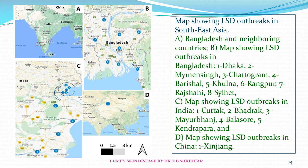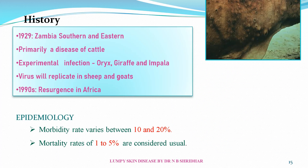A map shows LSD outbreaks in South East Asia, Bangladesh, and neighboring countries. Another map shows LSD outbreaks specifically in the different states of Bangladesh. In India also, cases are being reported from different parts.